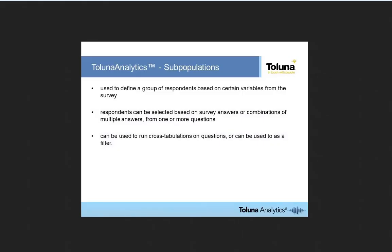Subpopulations are a concept used to define a group of respondents based on certain variables from the survey or questionnaire. Respondents can be selected based on survey answers or combinations of multiple survey answers from one or more questions. Subpopulations can be used to run cross-tabulations on questions or can be used as response filters.